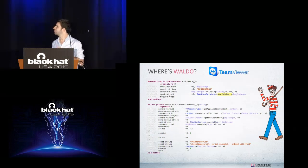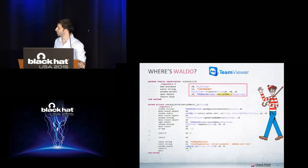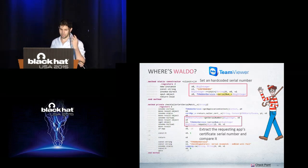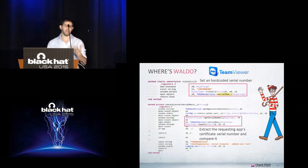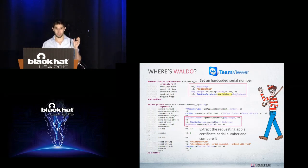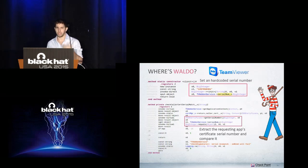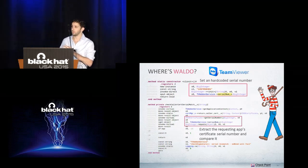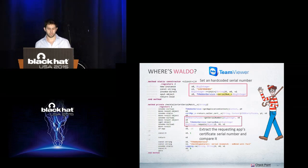Let's go over TeamViewer's code. What you can see here is that the plugin sets a hard-coded number. When an app connects to it, the plugin extracts the certificate of the connecting app, then gets the serial number of the connecting app's certificate, and compares it to the hard-coded integer. If it matches, the plugin lets the app control it and perform privileged actions.